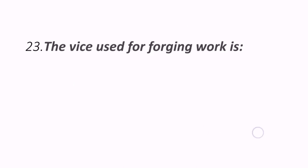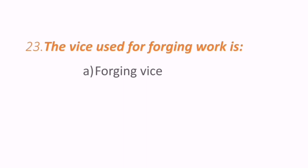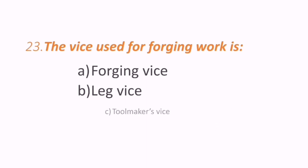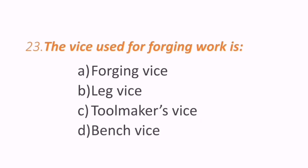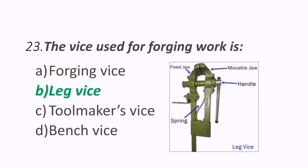Twenty-third question: the vice used for forging work is which type? Options are forging vice, leg vice, tool maker's vice, or bench vice. The correct answer is leg vice, which is used for forging work, as seen in the figure.